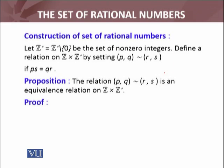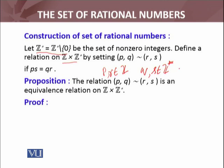For the construction of the set of rational numbers, consider Z*, the set of non-zero integers. Define a relation from Z to Z*: the Cartesian product Z×Z*. Here P and R are from the set of integers and Q and S belong to Z*, the set of non-zero integers — so Q ≠ 0 and S ≠ 0 since 0 is not in Z*. The ordered pair (P, Q) is related to (R, S) if PS equals QR.